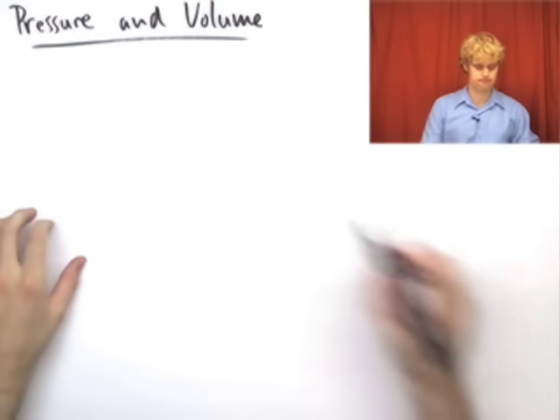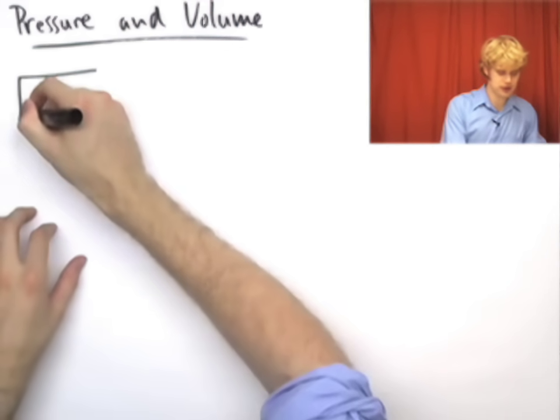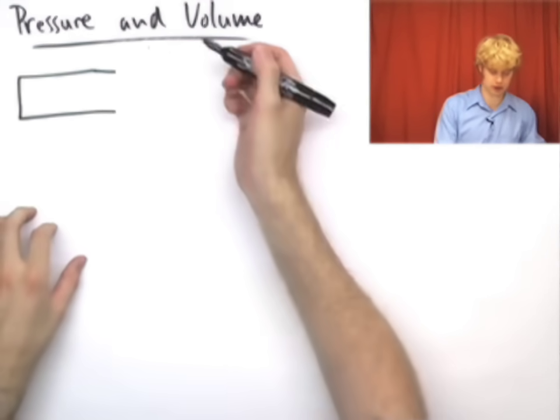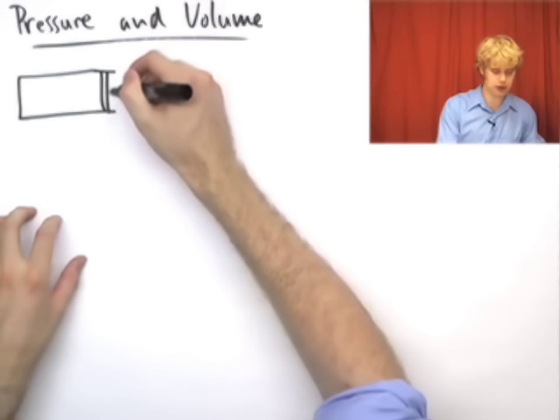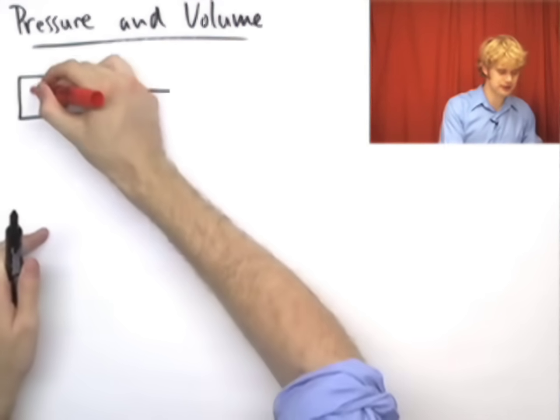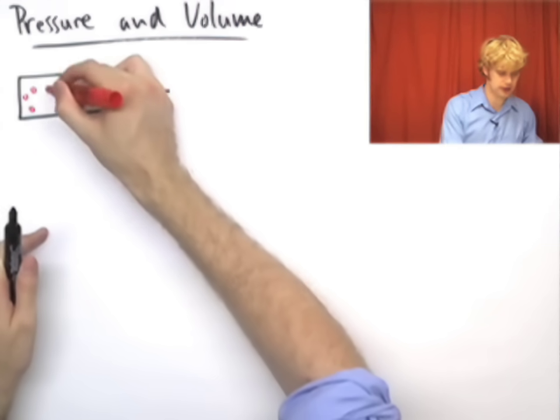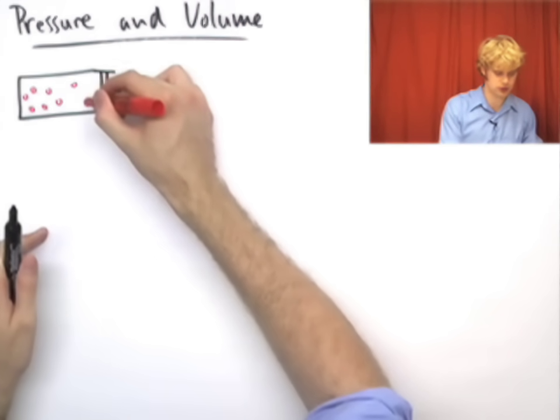Let's take a look at the relationship between pressure and volume of a gas. To do this, we're going to imagine that we have a container similar to ones we've looked at before, where I've got a plunger on one end. This container is filled with gas particles, which I'll indicate as usual by these red circles here.